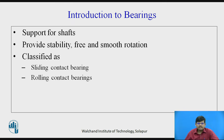When the length of shaft increases, to have intermediate supports, we go for bearings. Bearings not only support the shaft, but they also provide stability and free and smooth rotation of the shaft. They do not hinder the process of rotation or power transmission. Bearings are very important wherever you have rotational elements like shafts.